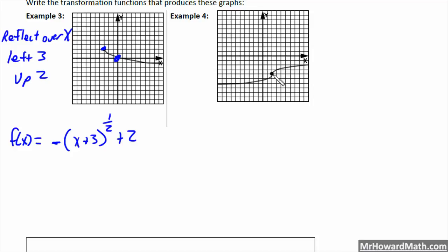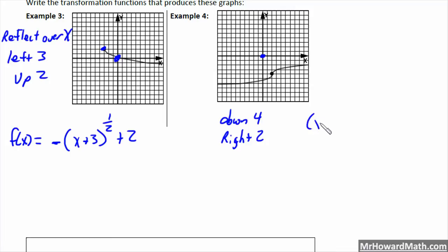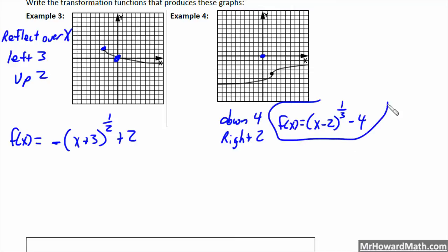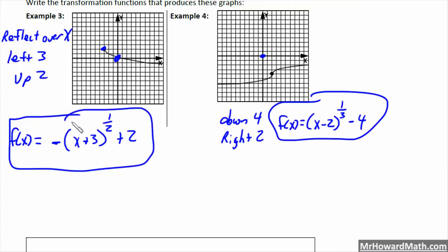For example 4, the shape indicates x to the 1 third power. It's not reflected in any way — it goes the correct direction. The anchor is down 4 and right 2 from the origin, at 2, negative 4. So f of x equals (x minus 2) to the 1 third power minus 4.